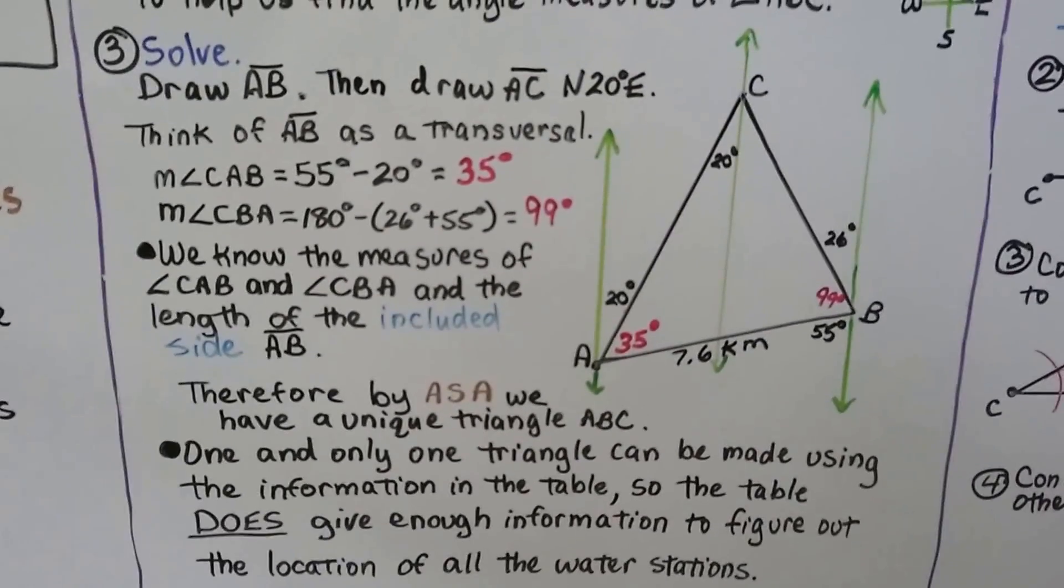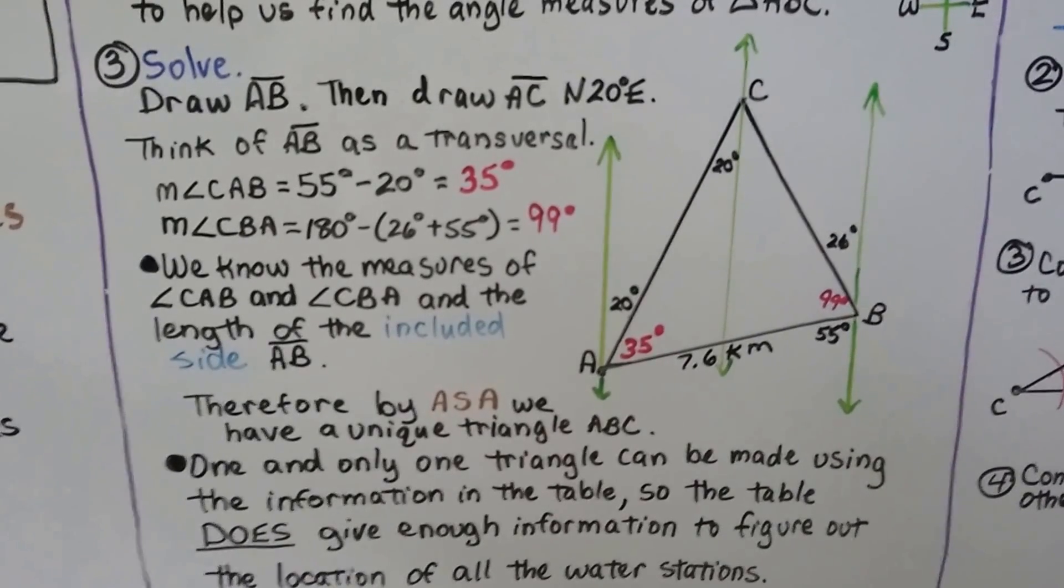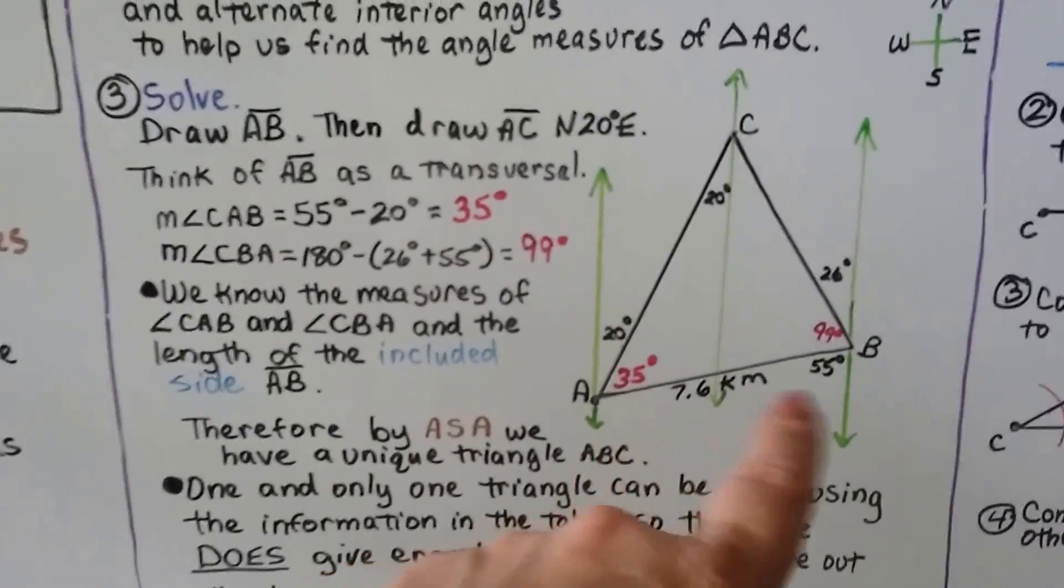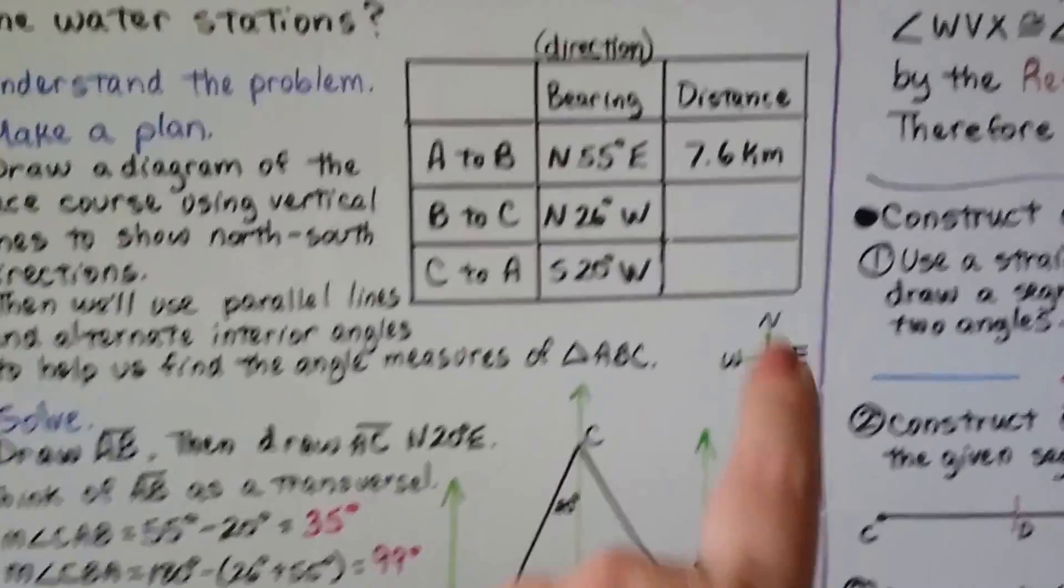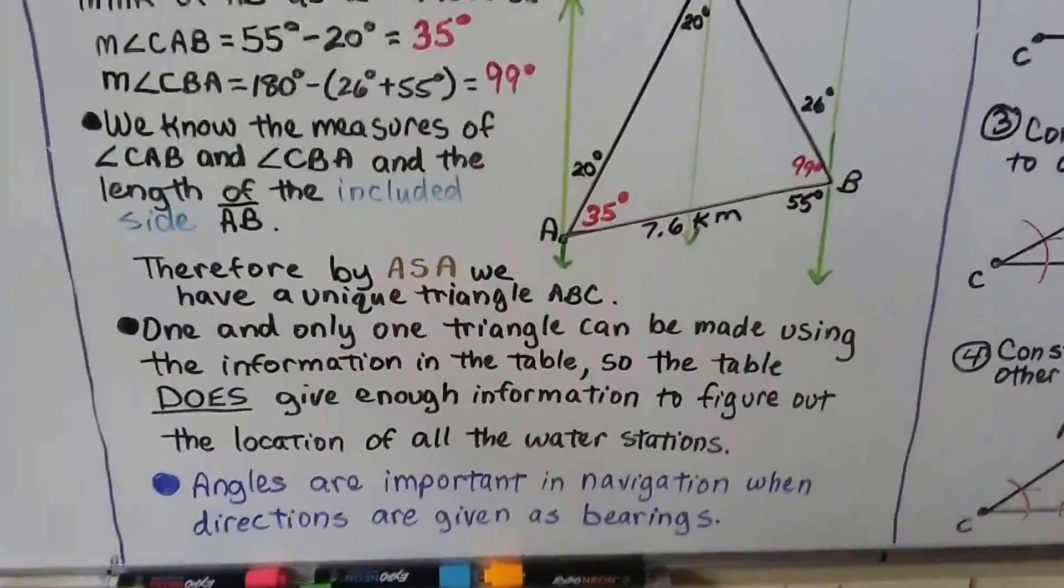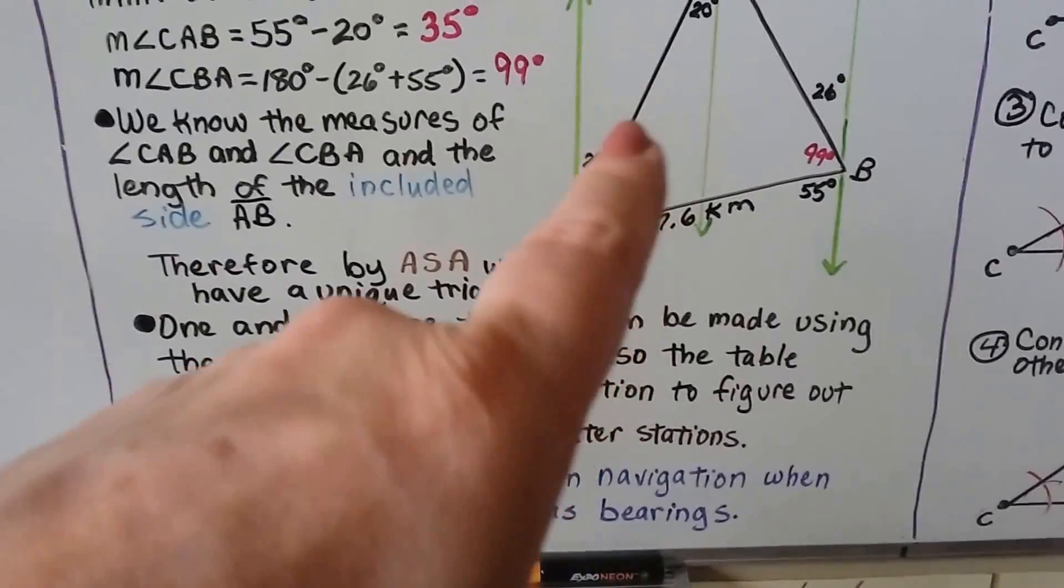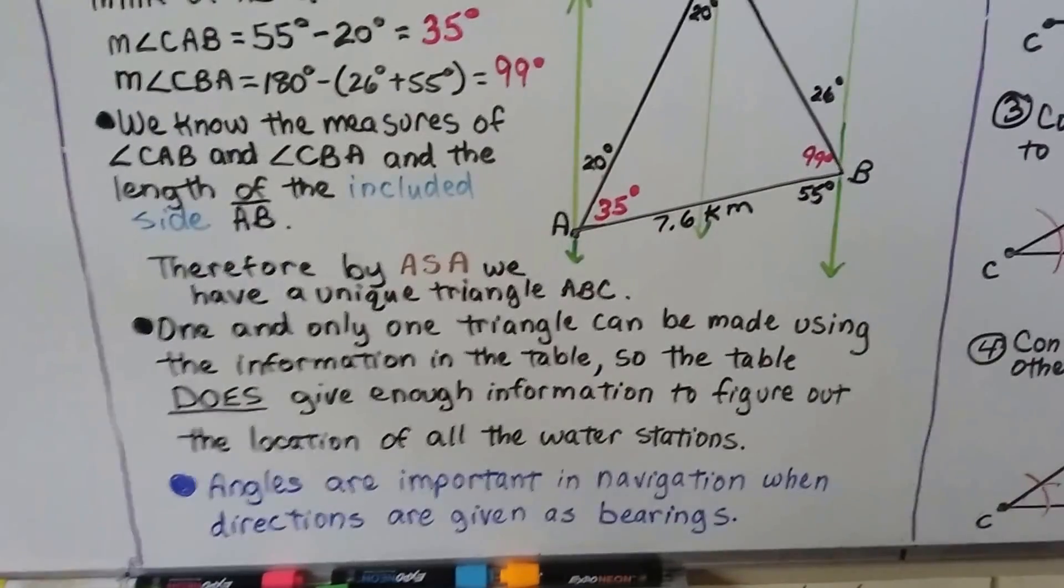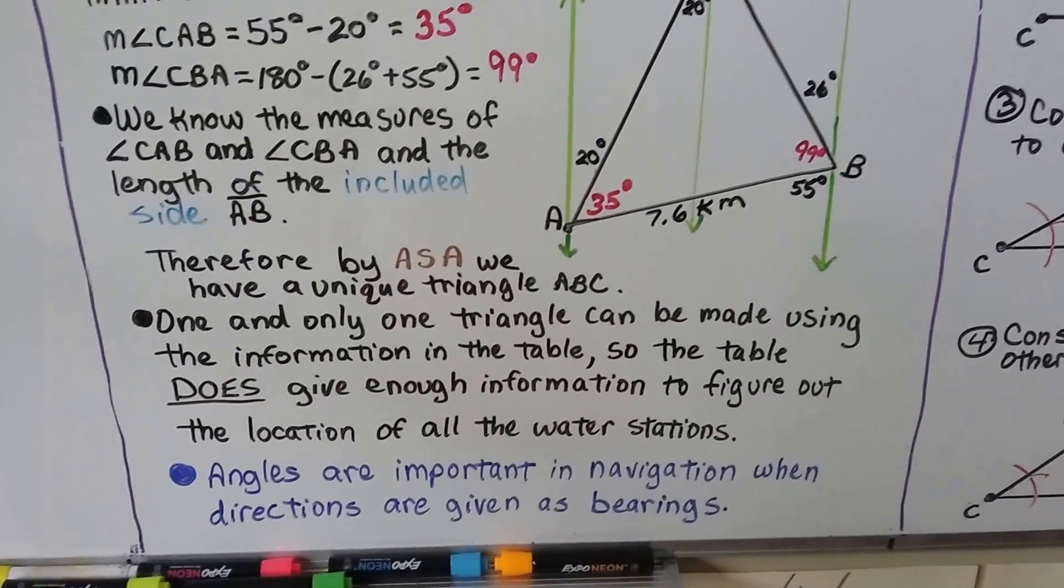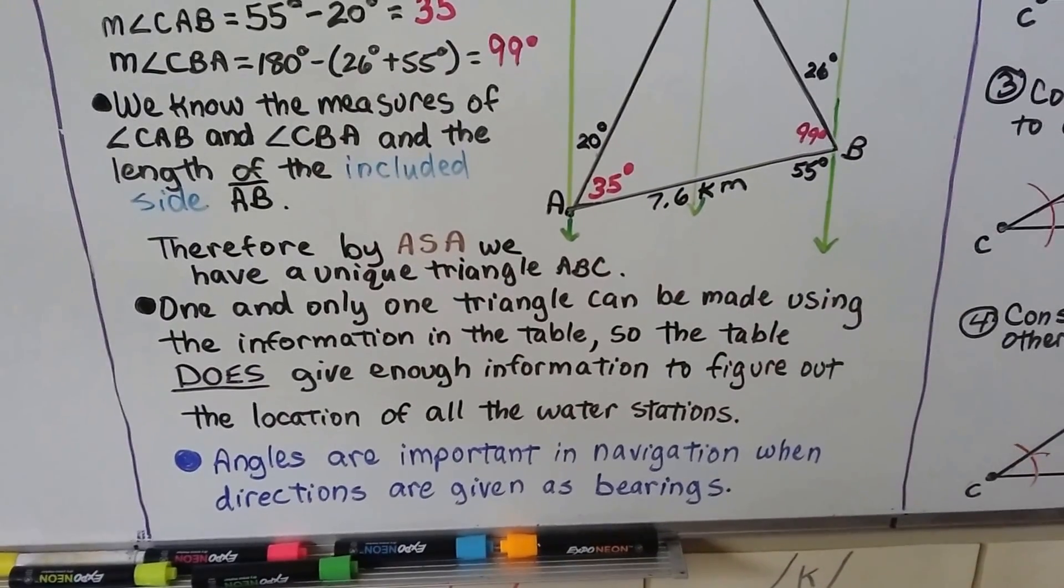We know the measures of angle CAB, that's 35 degrees, and angle CBA, that's 99 degrees, and the length of the included side AB, which is 7.6 kilometers. Therefore, by ASA, angle-side-angle, we have an angle, a side, and an angle. We have a unique triangle, triangle ABC. One and only one triangle can be made using the information in the table. So the table does give enough information to figure out the location of all the water stations.